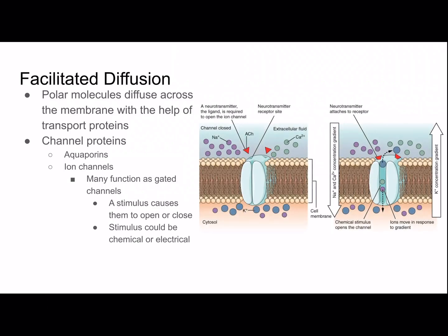In this picture, neurotransmitters need to bind to the channel in order to open it. Once the neurotransmitters stimulate the ion channel to open, ions can diffuse through it. Carrier proteins, which alternate between two conformations, can also perform facilitated diffusion.